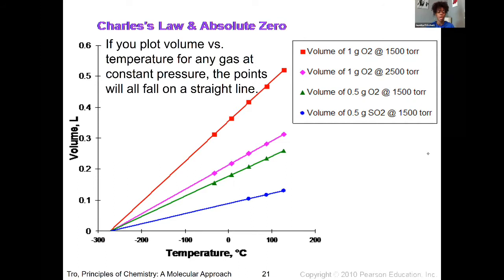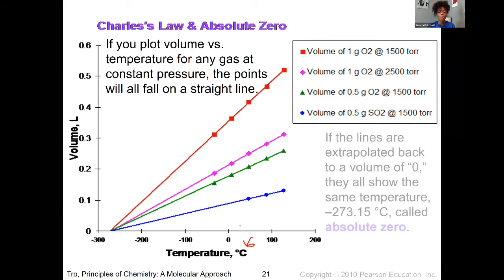And so you see that when we're looking at different amounts of oxygen at different pressures, there's this linear relationship that exists between the volume and the temperature. Now this graph is showing you the temperature in Celsius, and this is going to help us understand why we're converting to that Kelvin temperature.